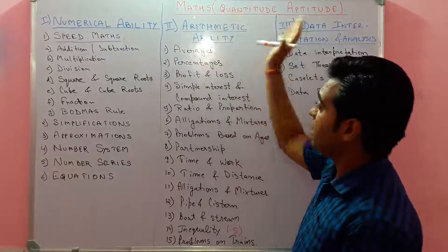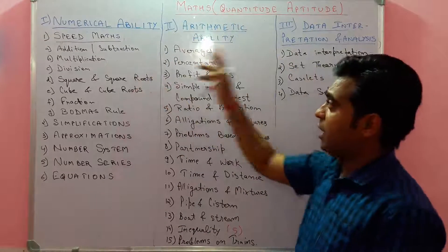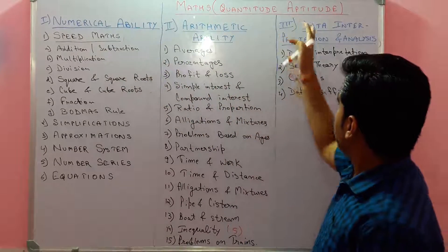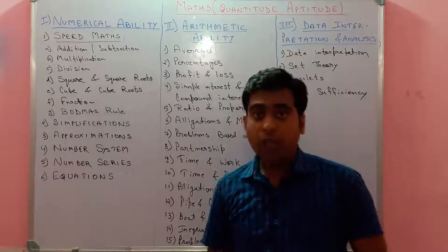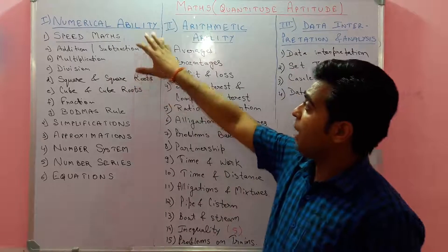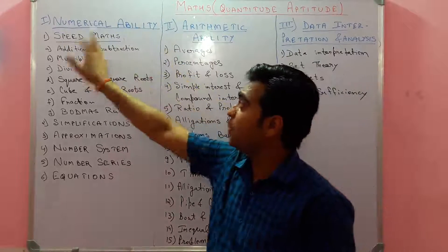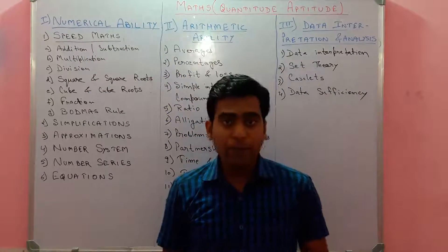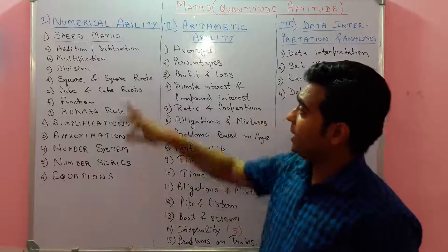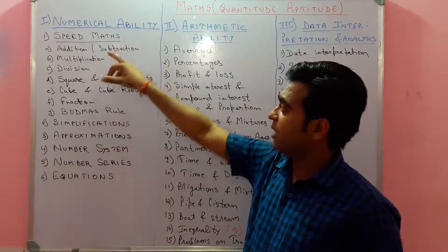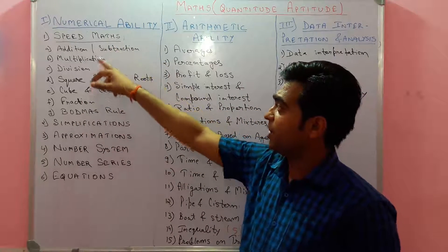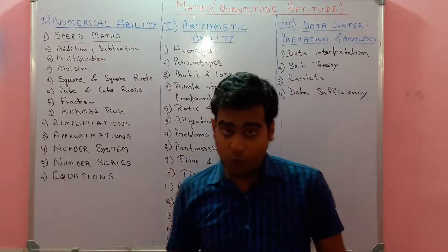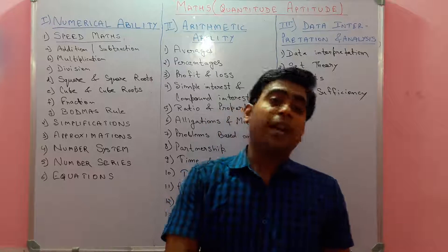So let's discuss. First of all, we divided quantitative aptitude into three parts: numerical ability, arithmetic ability, and data interpretation. In numerical ability, the first section is speed math, which is very important. In speed math, topics include addition, subtraction, multiplication, squares, square roots, cubes, and related things.